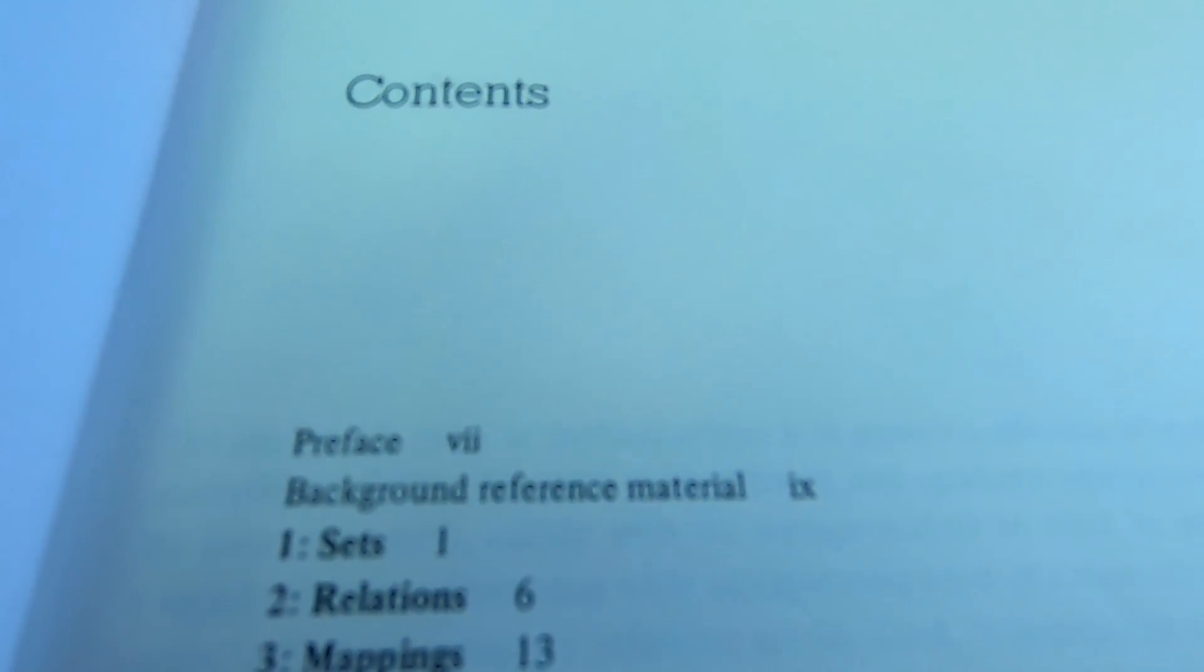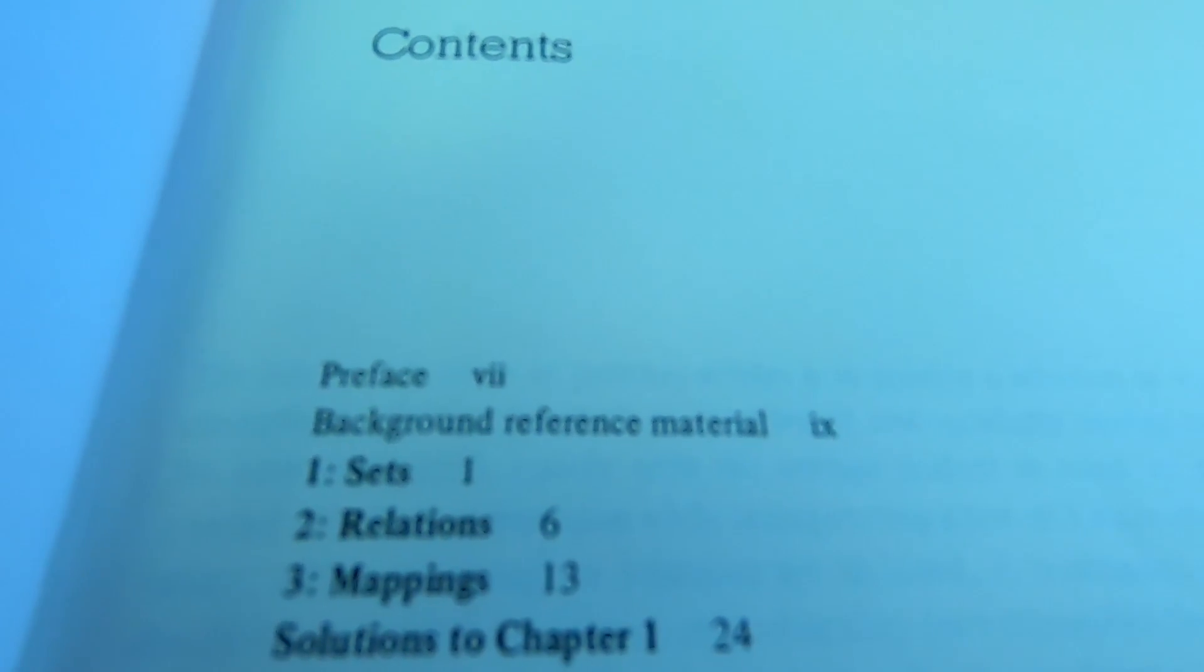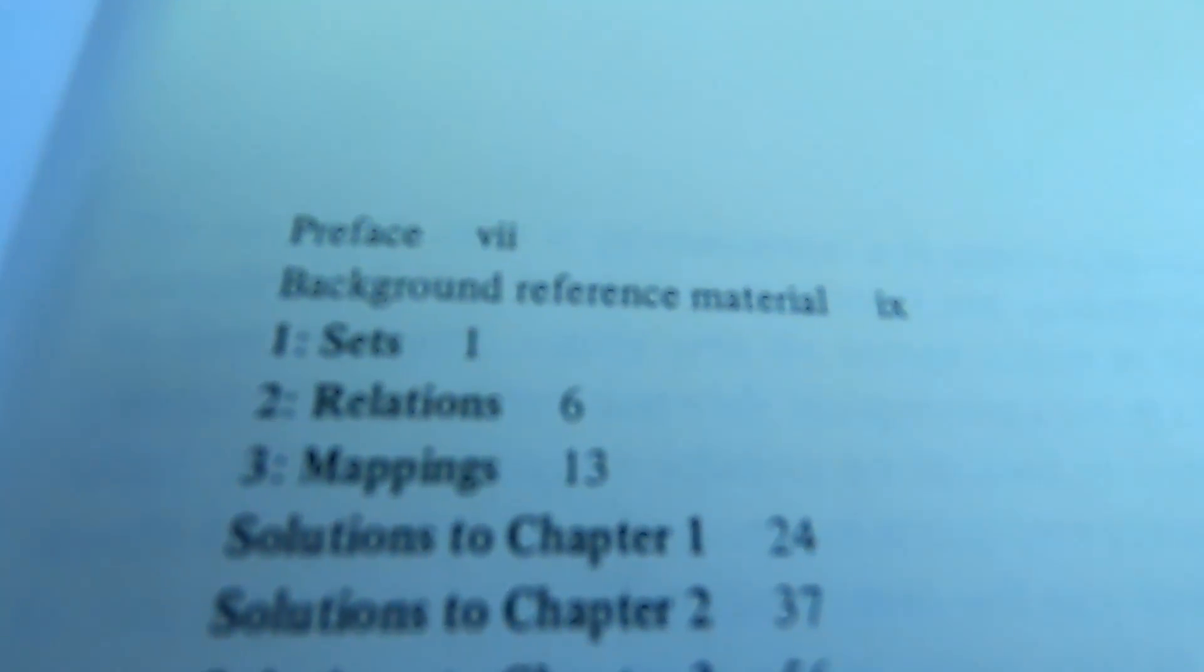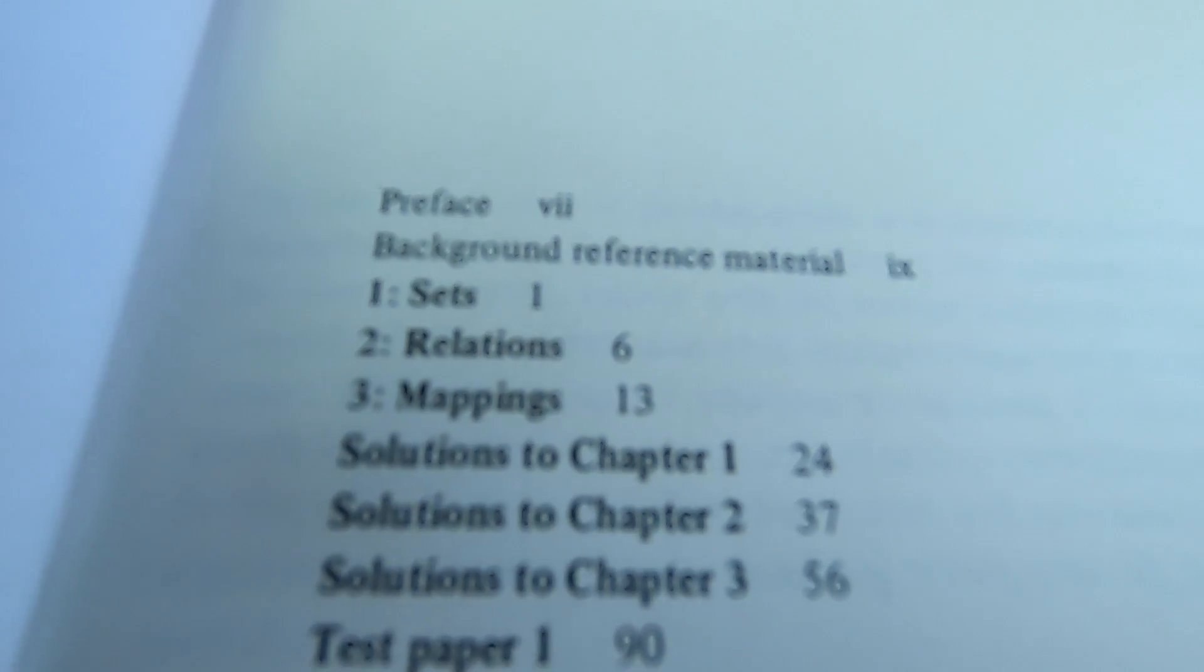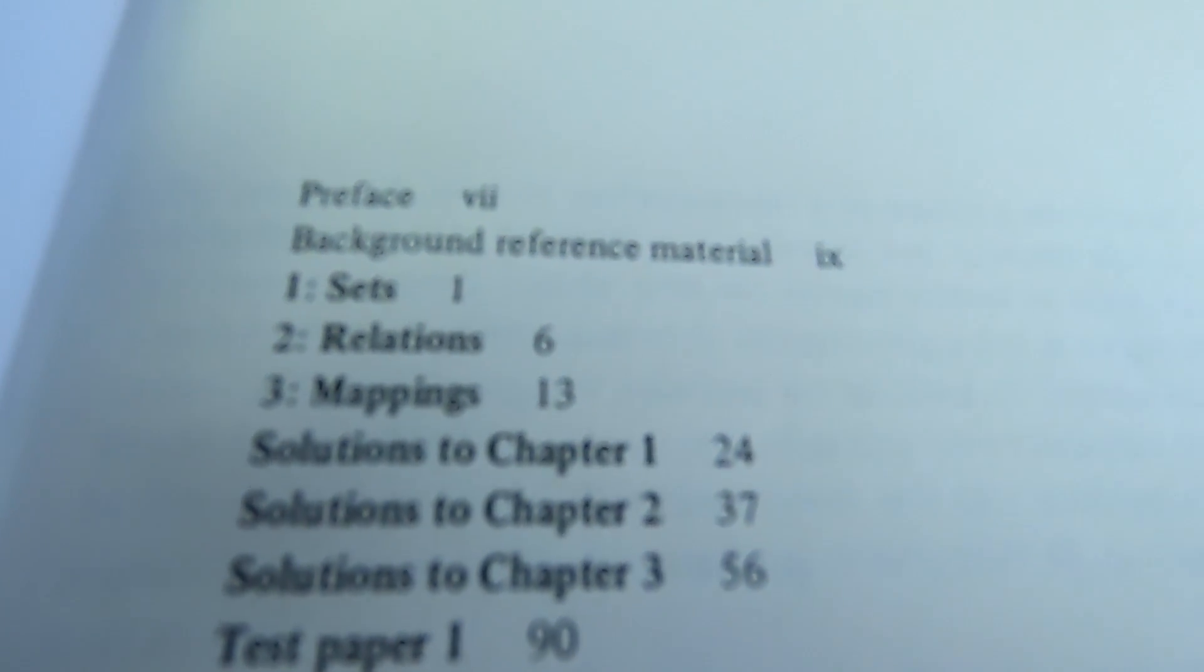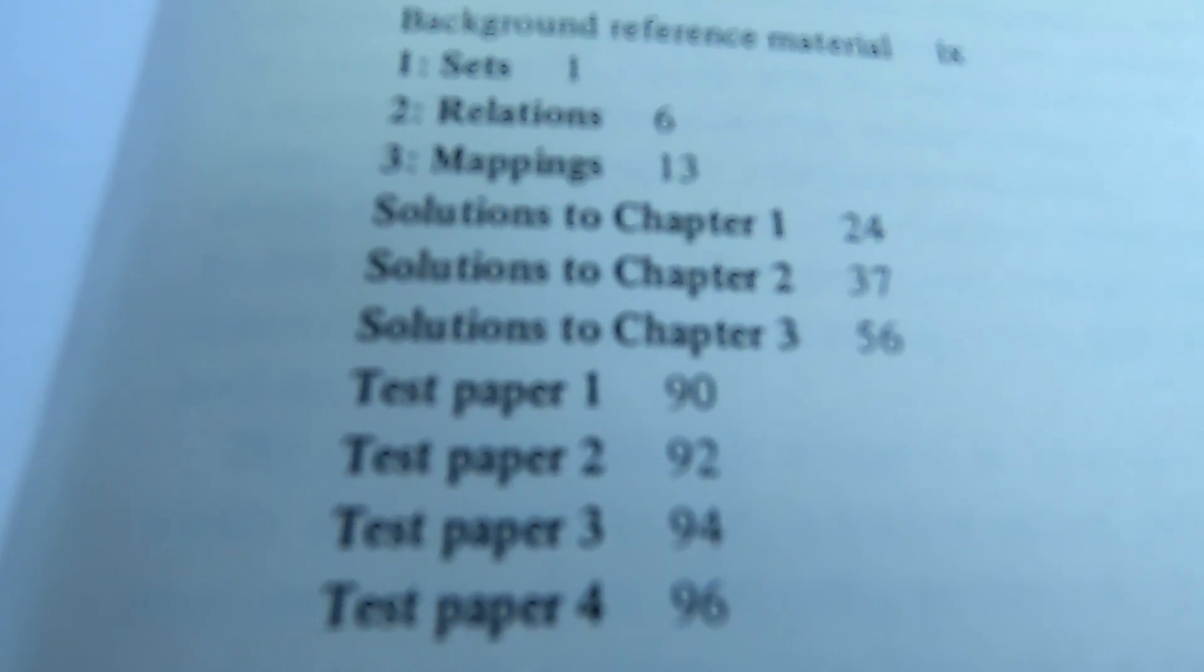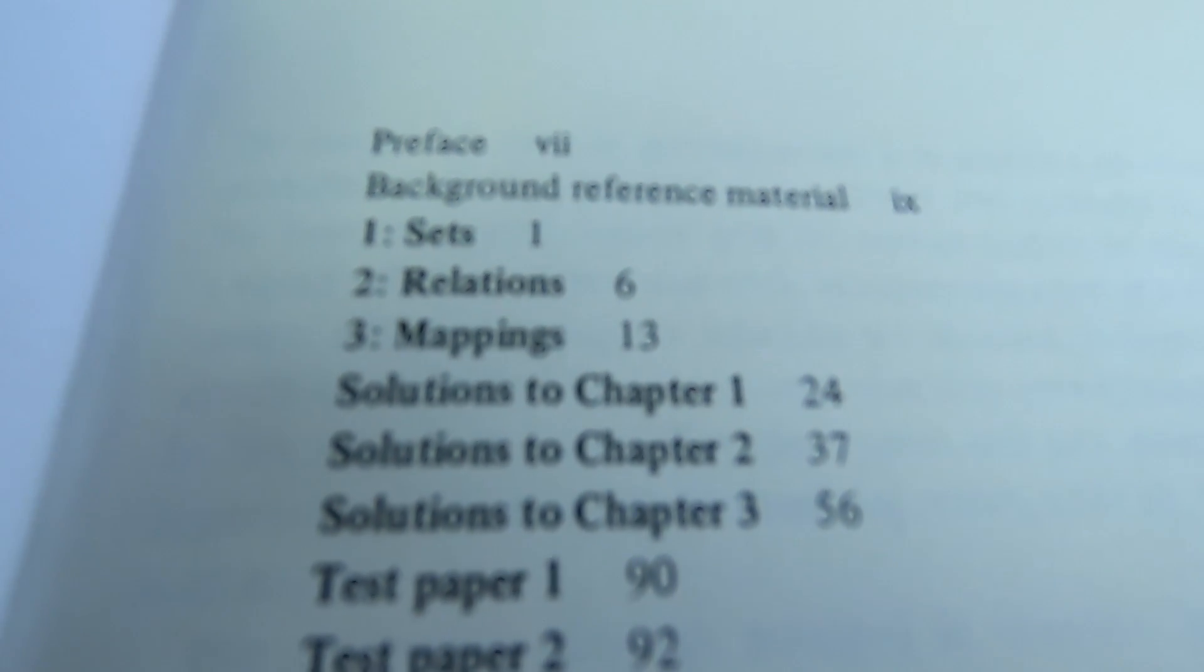This is the table of contents so it starts with a preface and then they give you some background reference material and there's basically three sections. It's sets, relations and mappings and then the best part about this book is that there are solutions so this is actually a problem book. This is a book of math problems with solutions and after you go through all of it, if you actually do, you'll be a master, they give you tests. Now, unfortunately the tests do not have solutions. However, the fact that there are solutions to every single problem in this book make it an awesome book for self-study.